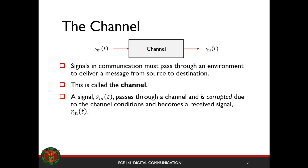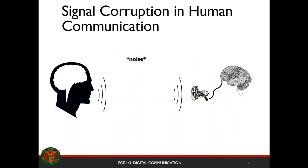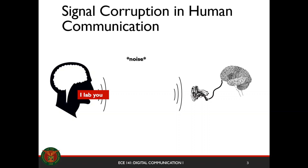Just to review, all communication must pass through a channel. It's an environment to pass through when we're going to deliver our message from source to destination. But this channel is unforgiving and harsh, therefore corrupts the signal SM of T, which is our symbol, and it becomes a received signal RM of T. To visualize that, we'll use a simple human communication system where we generate a message from our source, modulate that, convert it to a symbol form, but it will be destroyed by noise — but we want the receiver to be able to recognize that.